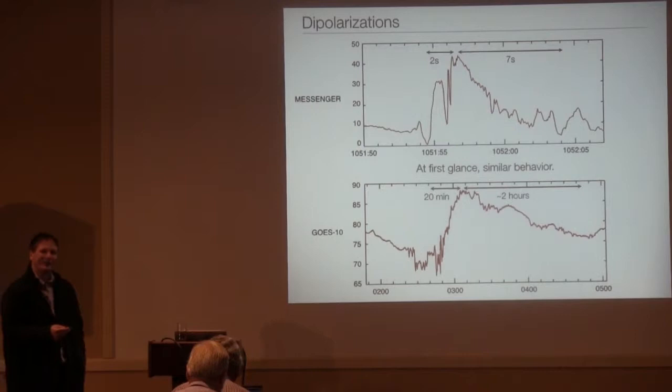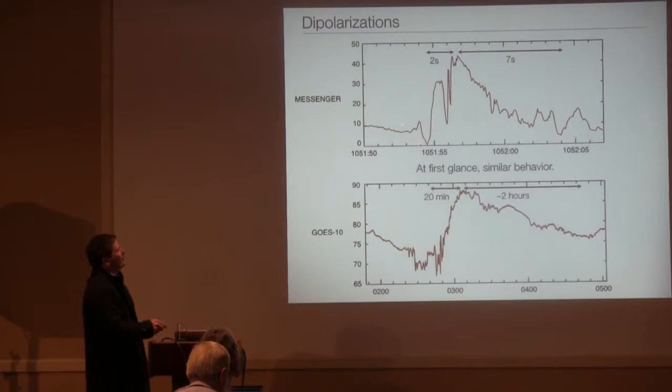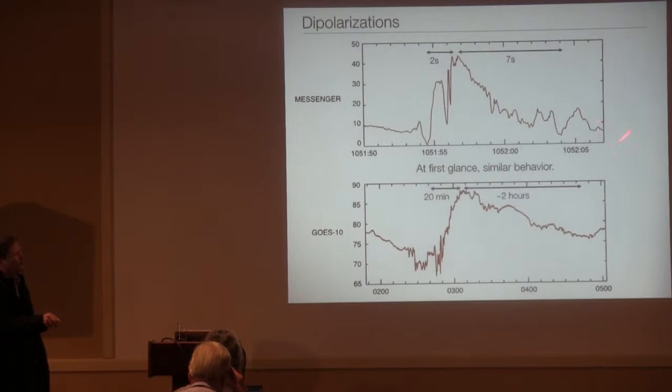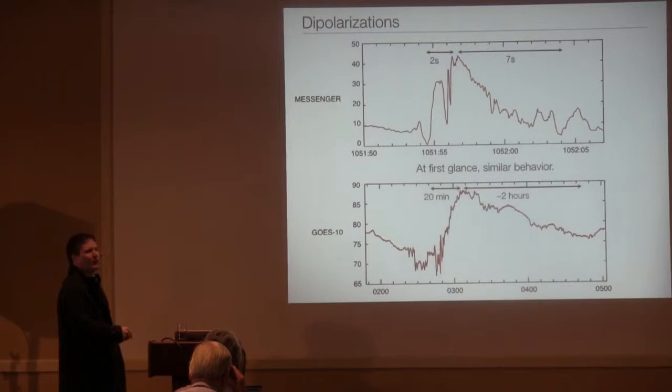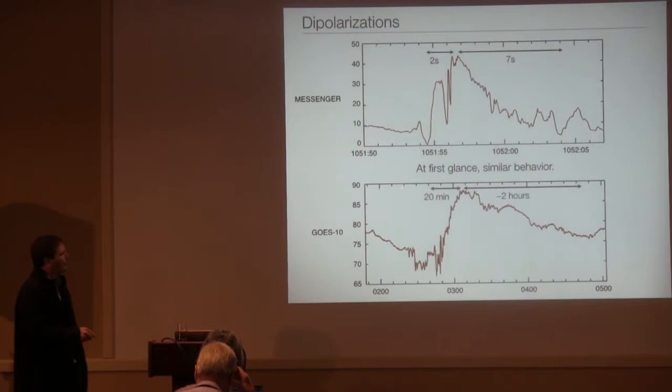One, of course, is the time scale. At MESSENGER, you see this rapid increase, this dipolarization. This goes from a stretched low BZ to a high BZ in about two seconds. And then it decays maybe five, seven seconds later. And then it'll be another dipolarization later. Here at Earth, you can see that this dipolarization occurs over maybe 20 minutes. Of course, over that 20 minutes, we're seeing all sorts of PI2 pulsations as well. And then the decay takes quite a while, maybe two hours or so.